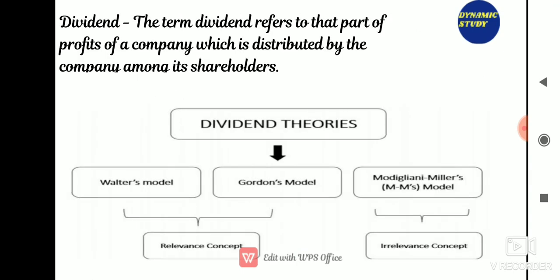Dividend is that part of the profit of a company distributed among its shareholders. It is the reward of shareholders for investment made by them in shares of the company. There are various dividend theories: Walter's model, Gordon's model, and Modigliani and Miller model. Walter's model and Gordon's model accept the relevant concept of dividend, while Modigliani and Miller accept the irrelevant concept.